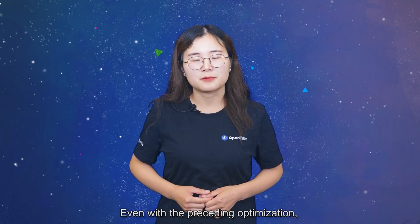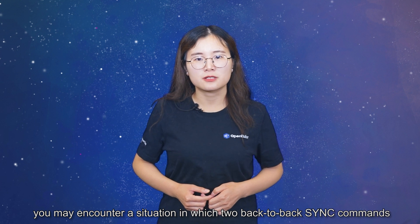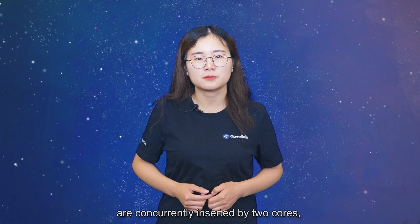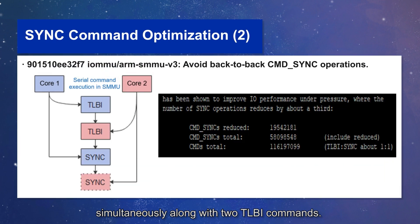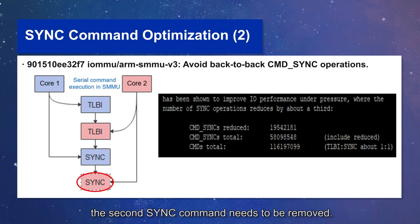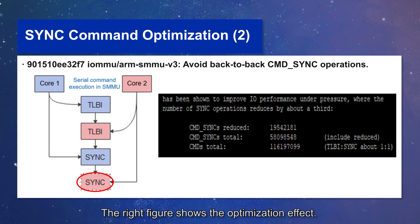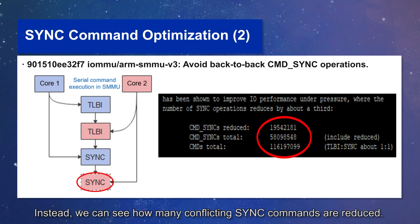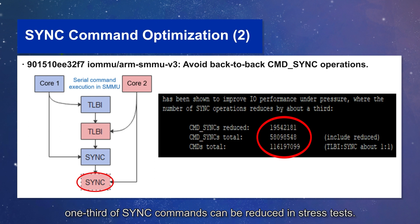Even with the preceding optimization, you may encounter a situation in which two back-to-back sync commands are concurrently inserted by two cores simultaneously, along with two TLBI commands. Since just one sync command is required in each command queue, the second sync command needs to be removed. According to the statistics, one-third of redundant sync commands can be reduced in stress tests.